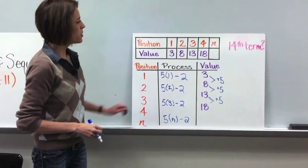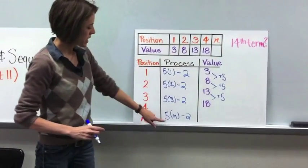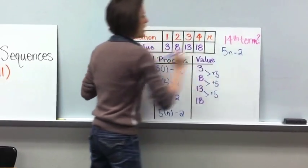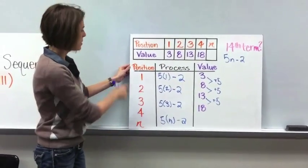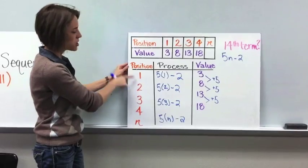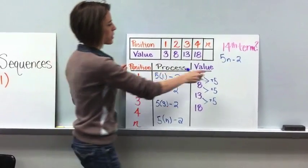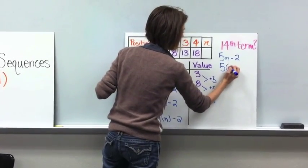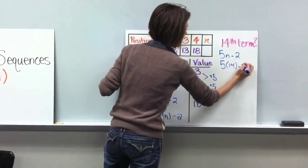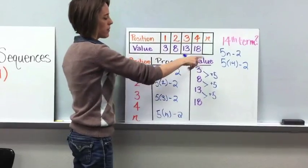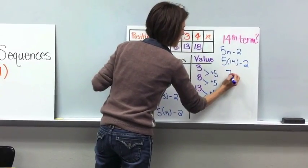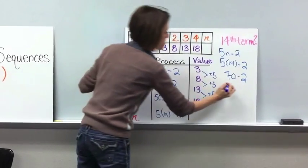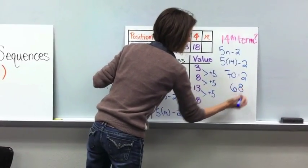To find the 14th term, we take our expression, which is 5n minus 2. If we want to find the 14th term, that means we substitute 14 in for n. So 5 times 14 minus 2: 5 times 14 is 70, minus 2 means our 14th term is going to be 68.